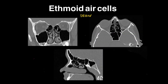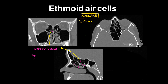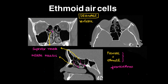Coming to the drainage pathway of ethmoidal air cells — again it is variable, but the most commonly seen anatomy is that, along with the frontal sinus, they drain through the fronto-ethmoidal recess into the superior recess and the middle meatus.